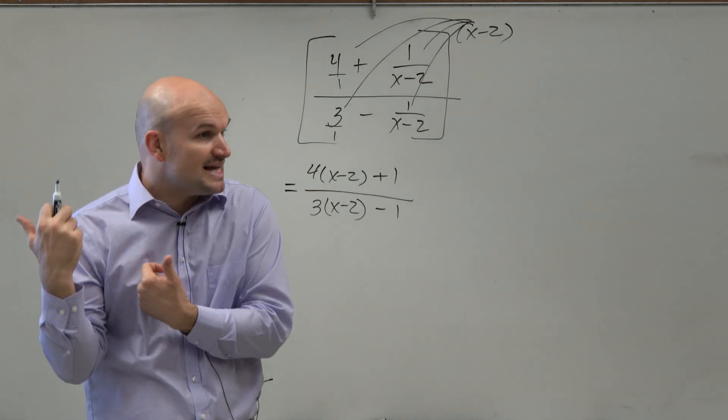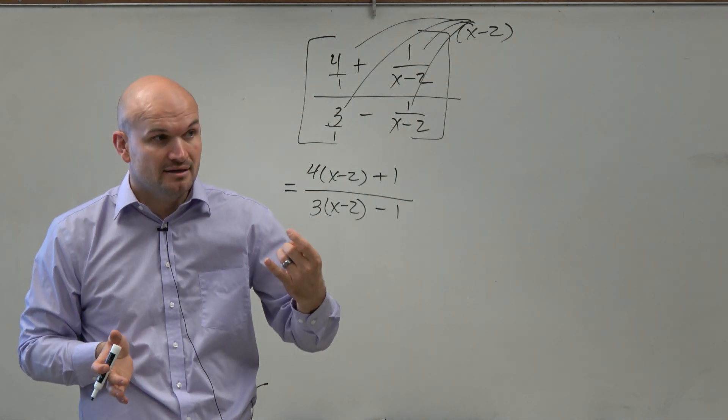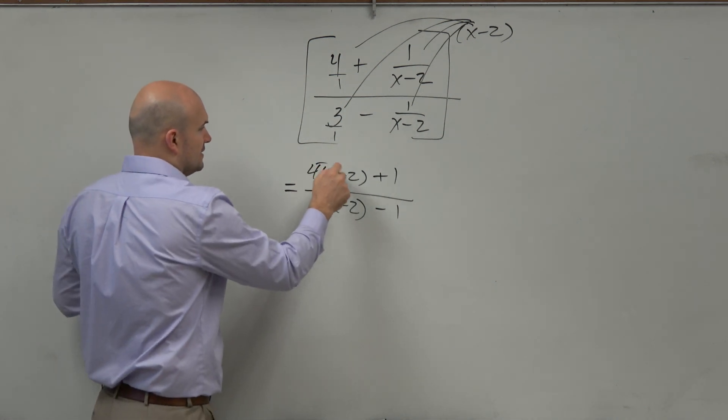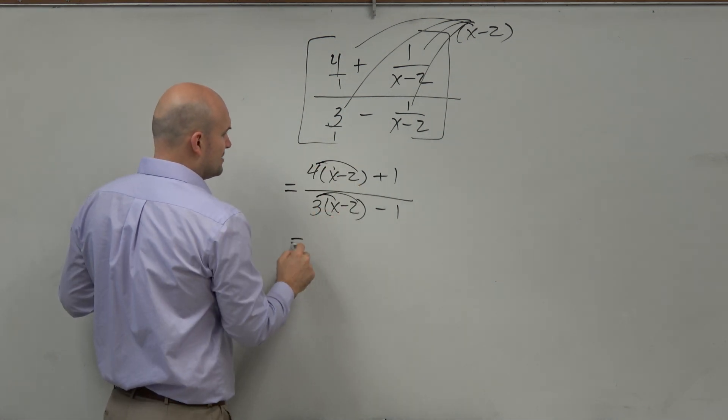So did you guys see? Just like the last equation, by multiplying by the LCD, now I just have one big fraction. That's it. That's a lot easier for me to solve from here, right? Or to simplify. Apply just a little distributed property. Combine some like terms.